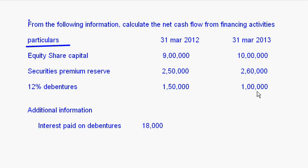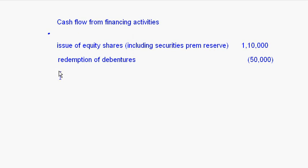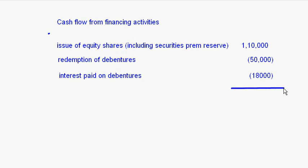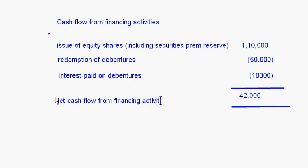Earlier debentures were 1,50,000, now 1,00,000 — so 50,000 has been redeemed, which is an outflow. Interest paid on debentures — you are again paying to the debenture holders, so that is an outflow of 18,000 rupees. That is all we have here. So the net cash flow from financing activities is 1,10,000 minus 68,000, which comes to 42,000.